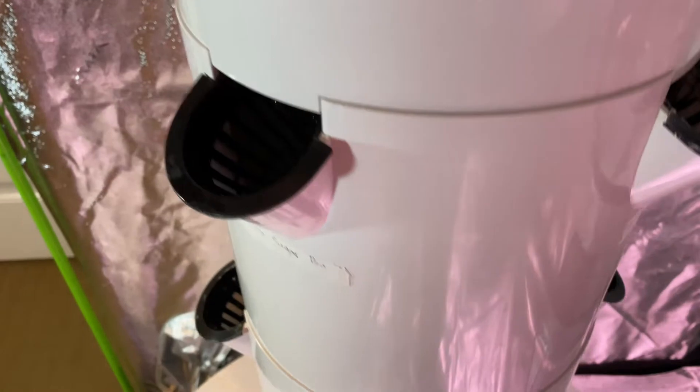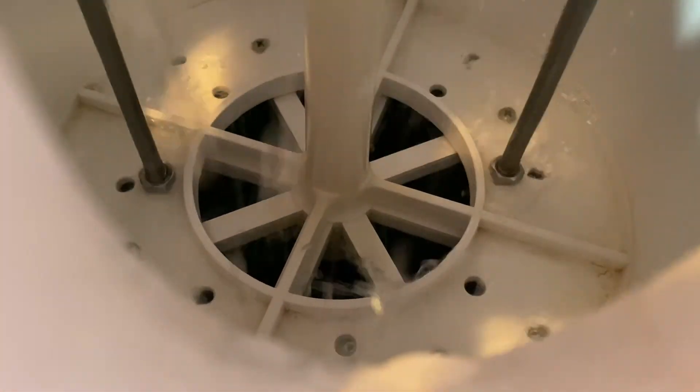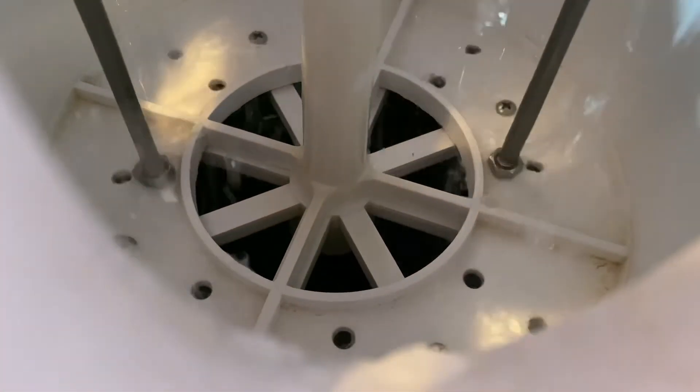I've left some of the net pots out so you could just see the water trickling down there. So all the roots will be inside those net cups and you can see they're getting nicely doused with water inside there. The roots will grow down inside the chamber here and they'll get plenty of water and plenty of air to grow.